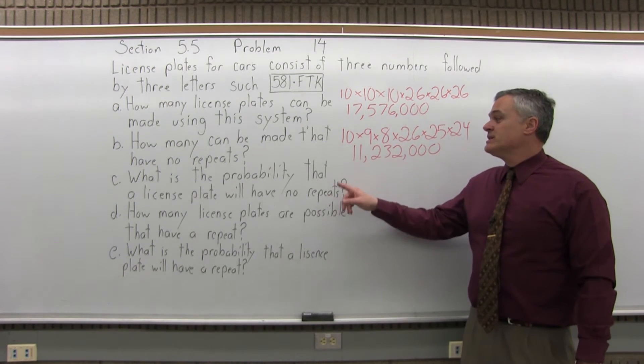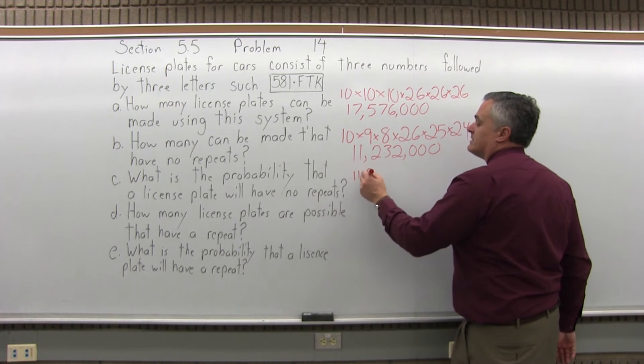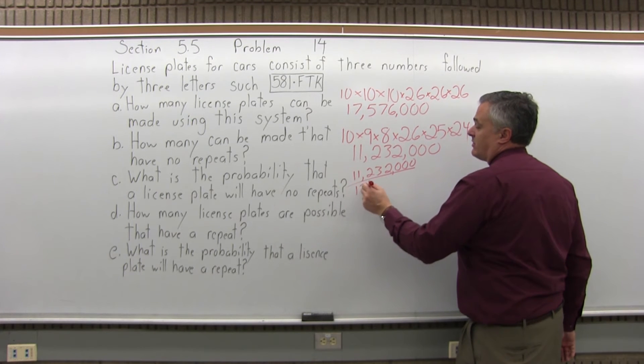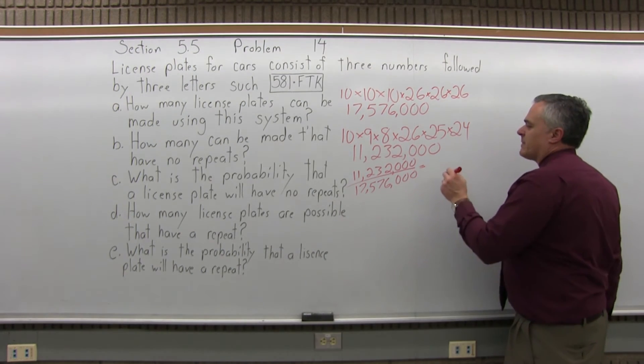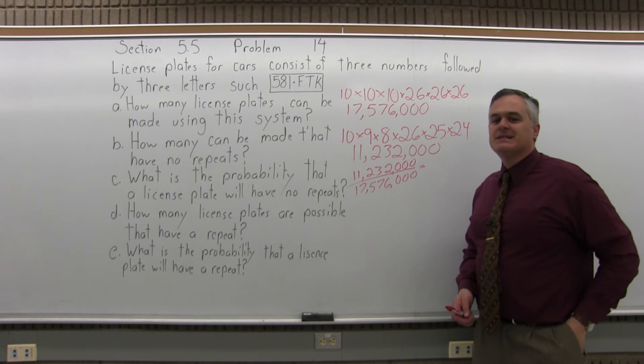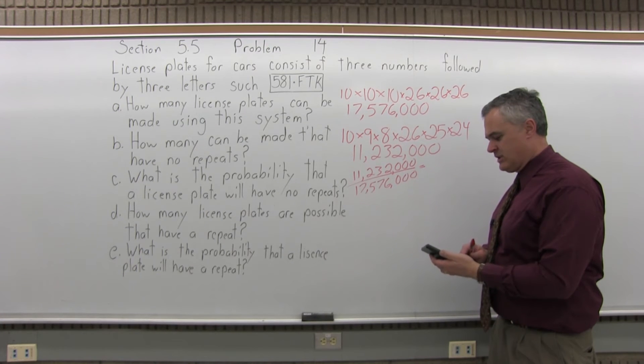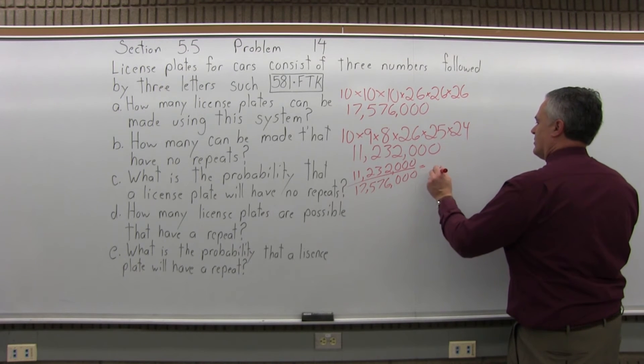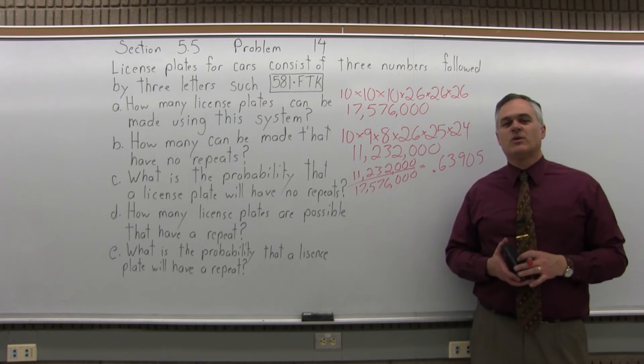C says, what is the probability that a license plate will have no repeats? Well, you have about 11,000,000 license plates with no repeats out of 17.5 million, or a little bit more, all together that you can make repeats, no repeats, anything goes. If you divide that out, it should be about 0.69. I actually have to divide. I can't do that. 11,232,000 divided by 17,576,000. It is 0.6390. We can round that a little bit, 0.63905. That's enough. Almost a 64% probability.